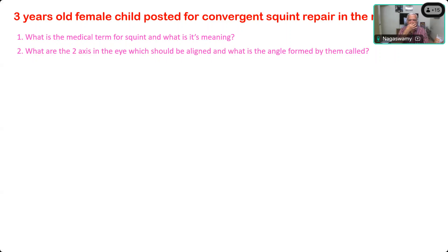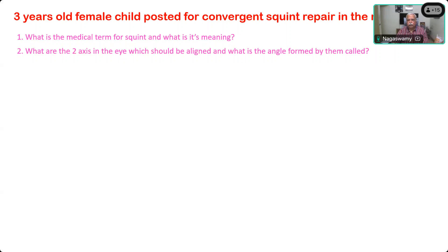What are the two axes in the eye that should be aligned, and what is the angle formed by them called? You say it is a misalignment of axes. So what axes are required to be aligned for proper vision? These axes don't normally go parallel to each other - they cut across each other a little bit and form a small angle called the angle of kappa.